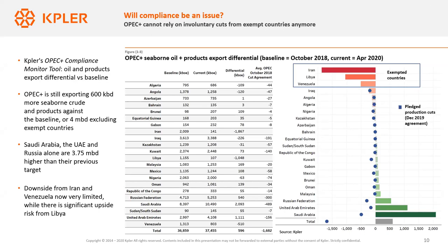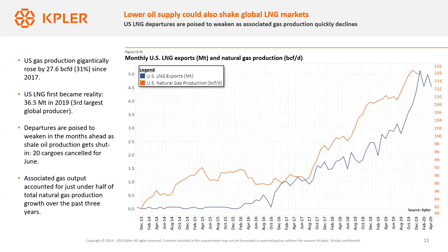We're already seeing production shut-ins in the US, and this will have impacts on the global gas and LNG markets as well. In the past few years, US gas production increased massively — volumes around 30 BCF per day just in the past three years, roughly what a country like Iran produces, making Iran the world's third largest gas producer. This is really what allowed the US to become a major LNG exporter — what we've called the first wave of US LNG — and as you can see on the chart, LNG exports follow the trend of gas production growth quite closely.